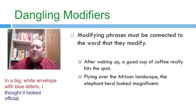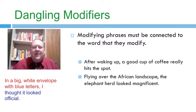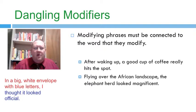Usually you can kind of figure out what the author means if you read around the other sentences, but sometimes the results can be quite humorous. 'After waking up, a good cup of coffee really hits the spot' — the noun is 'me, after I wake up,' but that's not stated anywhere, so it sounds like the cup of coffee woke up. Or: 'Flying over the African landscape, the elephant herd looked magnificent.' 'Flying over the African landscape' modifies I or we — whoever is in the airplane — but that noun does not appear anywhere in the sentence, so the only thing that can be flying are the elephants.